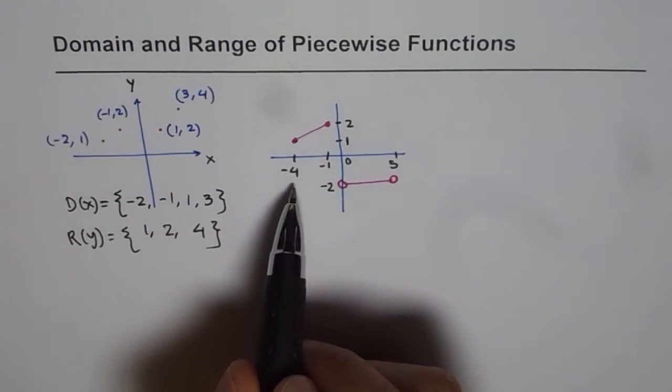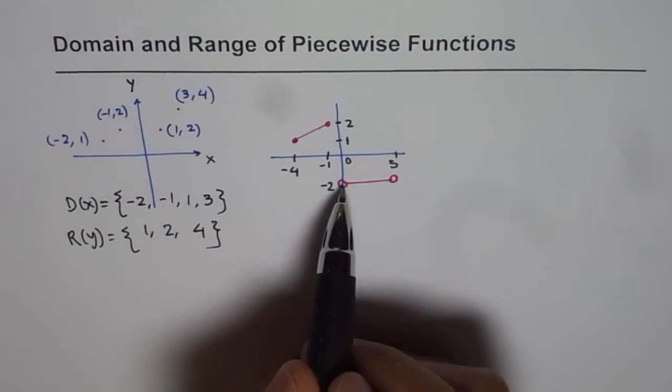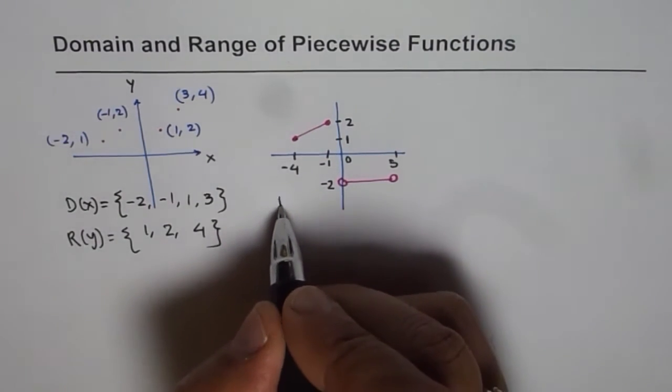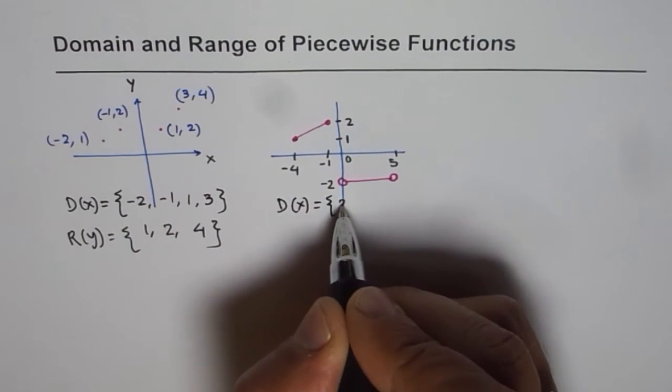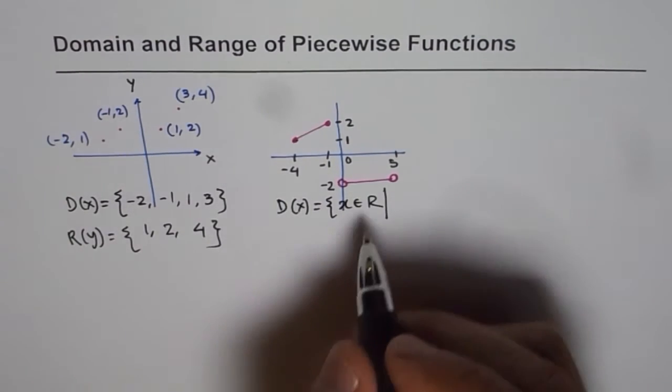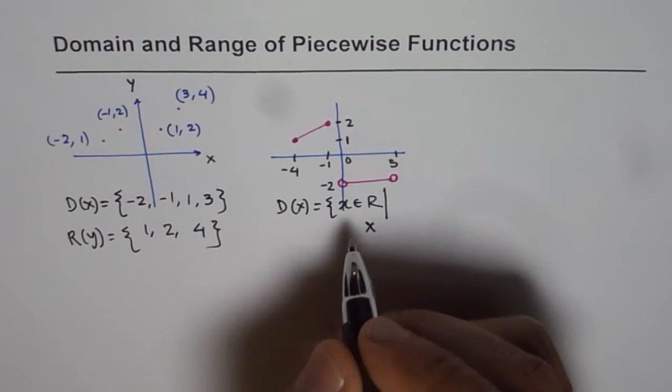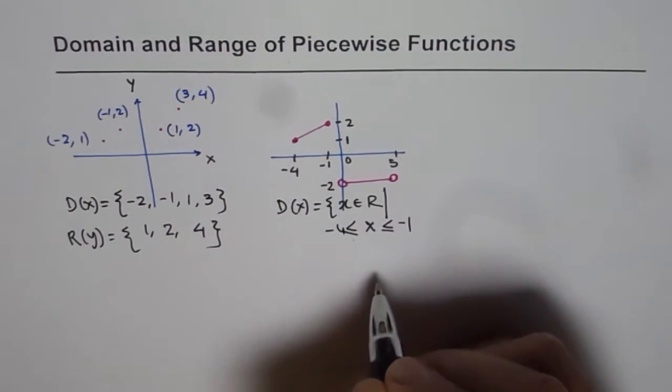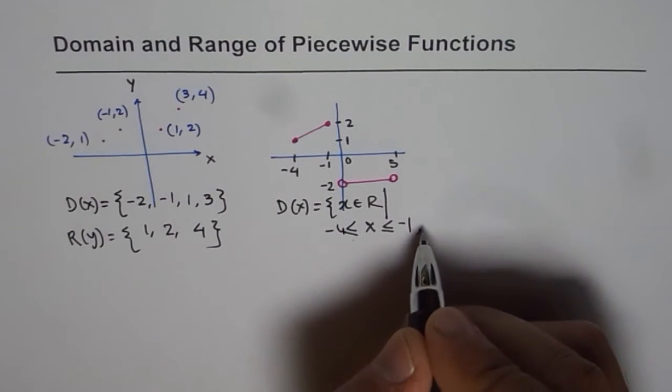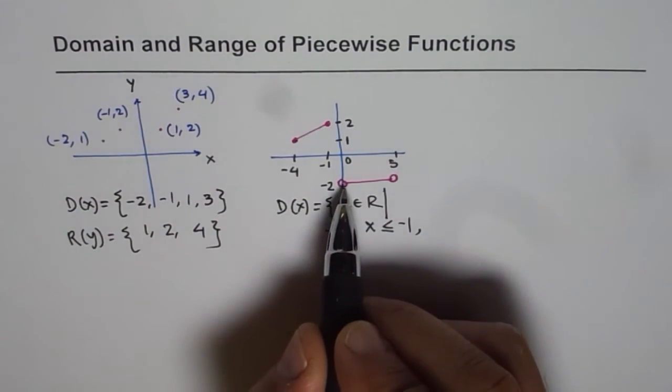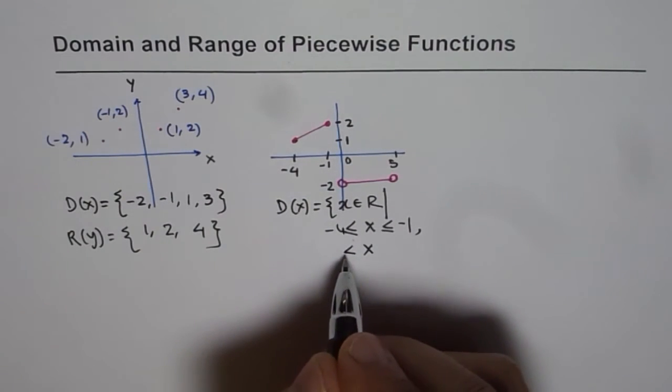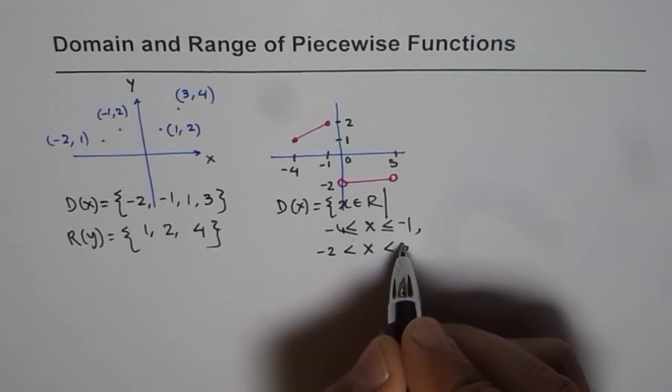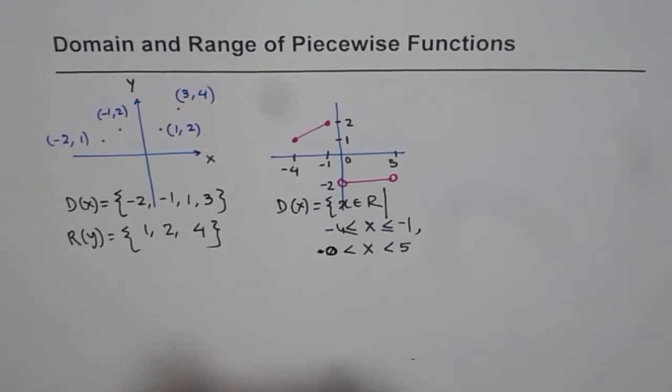Let us look into it. What are the x values which the function can have? It can have values between minus 4 and minus 1, both included, and also between 0 and 5, but 0 and 5 are not included. So we can say in this case that domain is: x belongs to real numbers, however the condition here is that x is greater than or equal to minus 4 but less than or equal to minus 1, union, x is greater than 0 and less than 5. So that becomes the domain for this function.